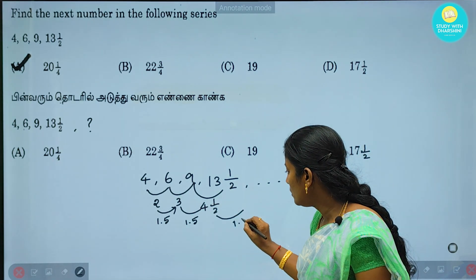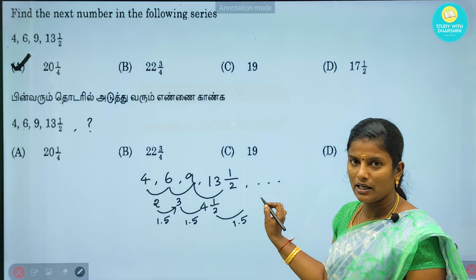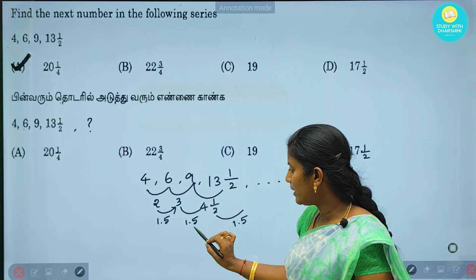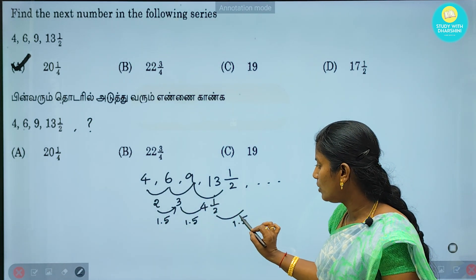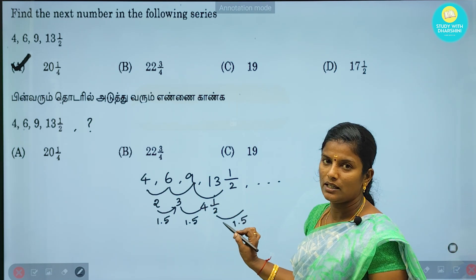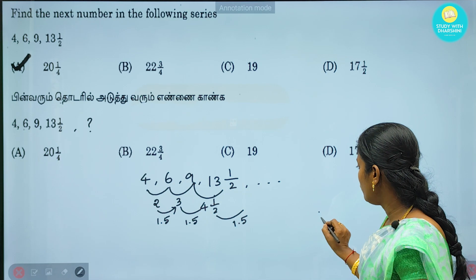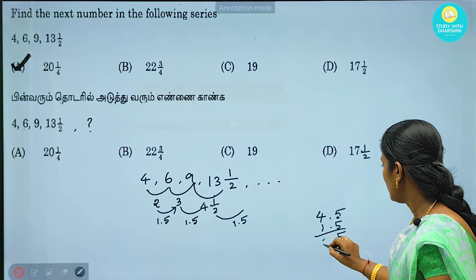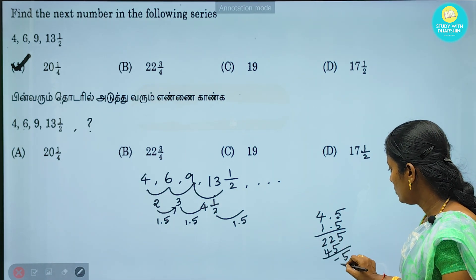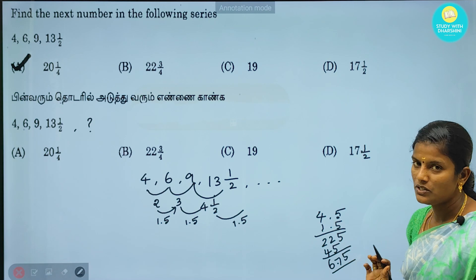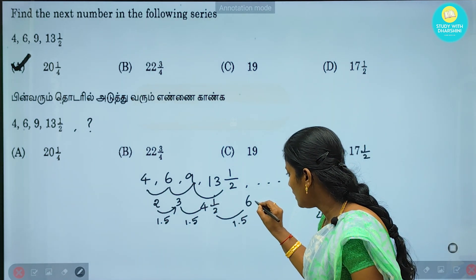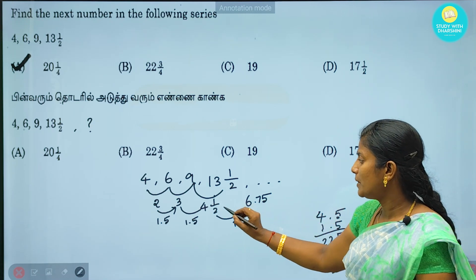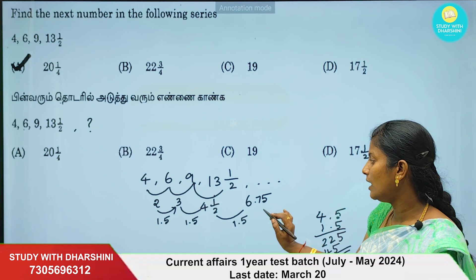4 into 1/2. If we solve this problem: 2 into 1.5, 3 into 1.5, 4 into 1.5. Each term is multiplied by 1.5. If you multiply 4 by 2, you will multiply 1.5 by 6 and 7.